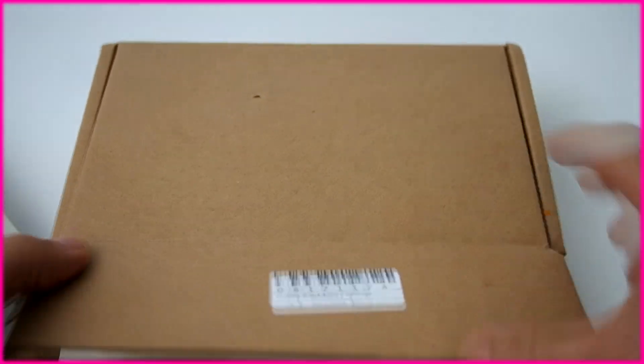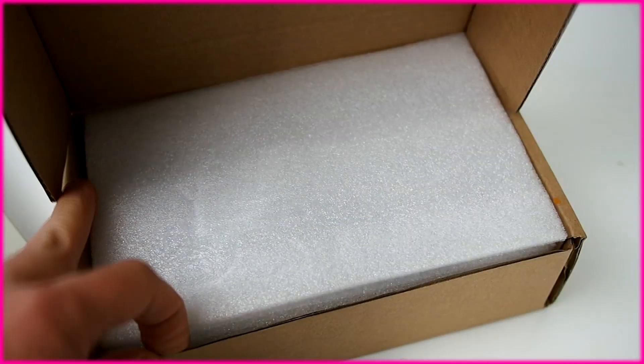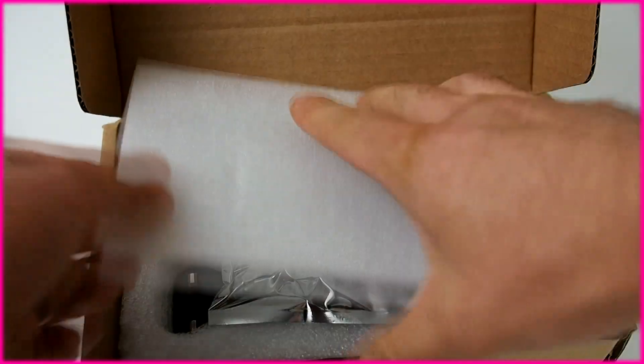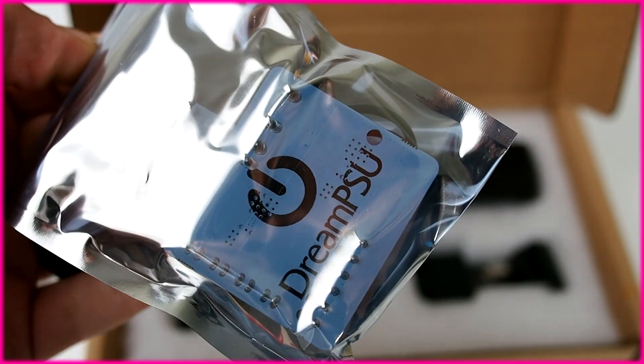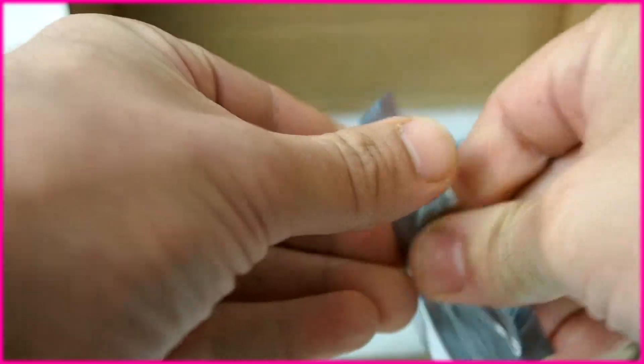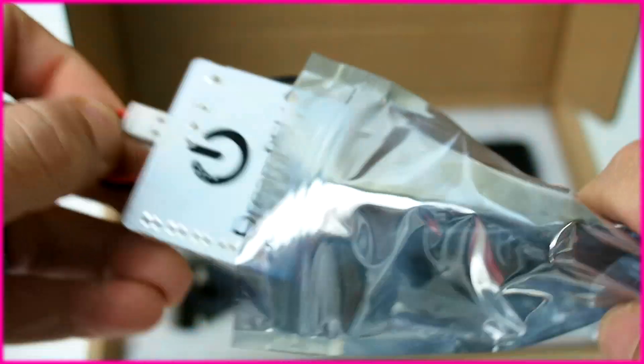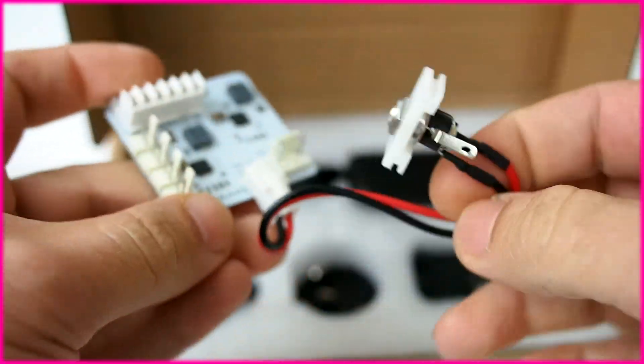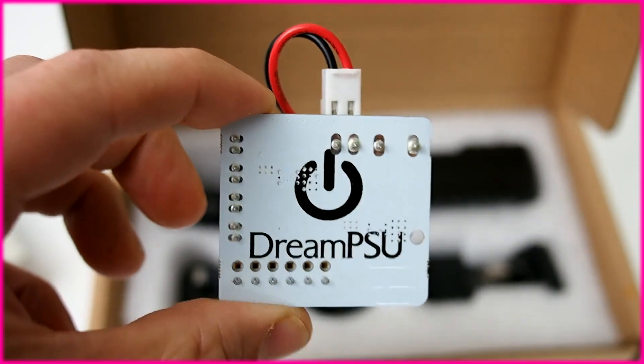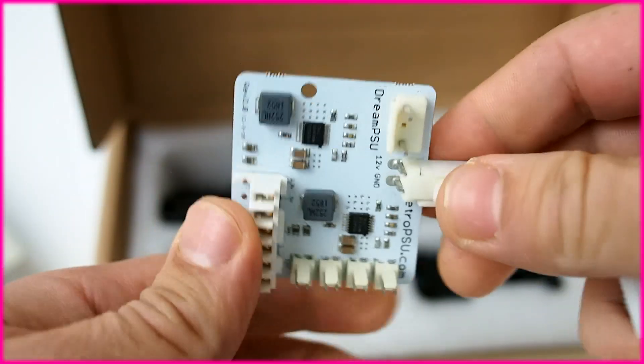But there is one other thing we got to do. Now I wasn't planning on doing this yet, but I got this box in the mail today. With the GDMU, you do create excess heat. The reason is your GDROM is no longer there. So one of the 12 volt rails increases to 14 volts and that creates excess heat. That's whether you go USB GDROM or the GDMU.